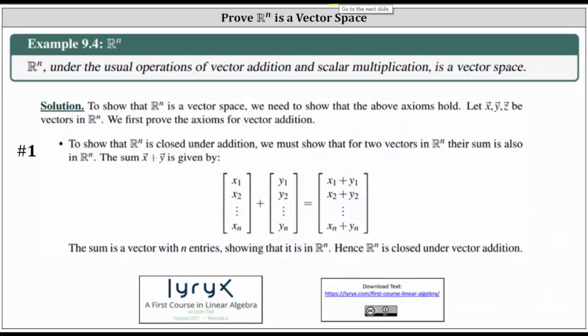In order to prove that Rn is a vector space, we need to show that all 10 axioms hold true. To begin, we will let vector x, vector y, and vector z be three vectors in Rn.